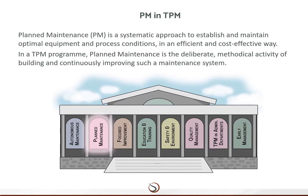Planned Maintenance is a systematic approach to establish and maintain optimal equipment and process conditions in an efficient and cost-effective way. It is the scheduling of maintenance activities based on observed behavior of machines, such as failure rates and breakdowns. By scheduling these activities around such metrics, the cycle of breakdowns and failure is broken, thus contributing to a longer service life of machines.